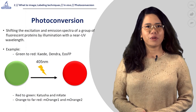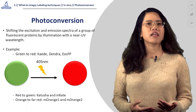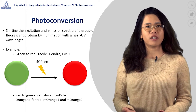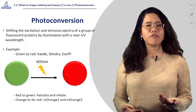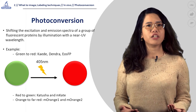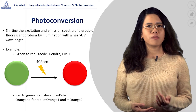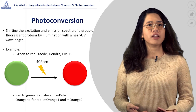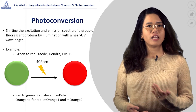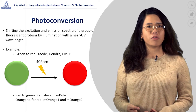Welcome to Unit 3: Photoconversion. Photoconvertible fluorescent proteins exhibit a shift in excitation and emission spectra, usually from green to red, after illumination with a near-UV wavelength. Non-photoconvertible fluorescent proteins that shift from green to red include Kaidae, Dendra, and EosFP, all of which were derived from corals.